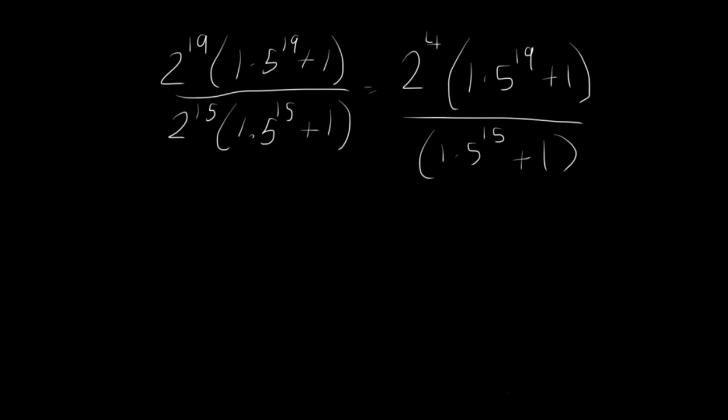So now this is a tricky part that most people have trouble with, I think. So the 1.5 to the 19th plus 1 and the 1.5 to the 15th plus 1, the numerator and the denominator respectively, we need to figure out how to cancel that. Because we have 2 to the 4th, 16, a nice whole number here, but then we have this mess. So we need to figure out a way to do that.